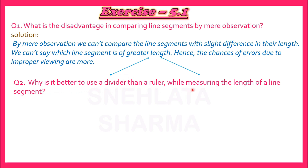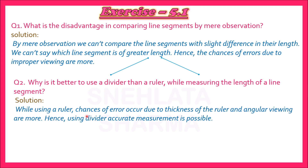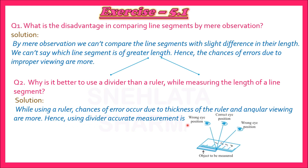Next Question number 2: Why is it better to use a divider than a ruler while measuring the length of a line segment? Is question mein humein batana hai kisi bhi line segment ki length measure karne ke liye ruler ke comparatively divider hamesha better kyun hota hai. Solution: While using a ruler, chances of error occur due to thickness of the ruler and angular viewing are more. Hence using a divider, accurate measurement is possible. Yahan par maine ek line segment liya hai jisko main ruler se measure kar rahi hoon.